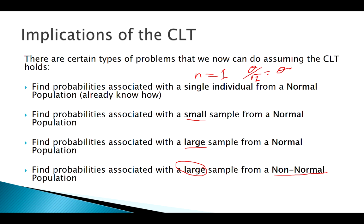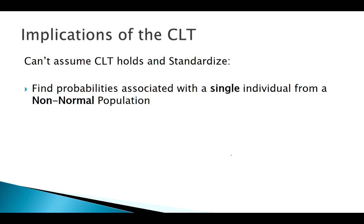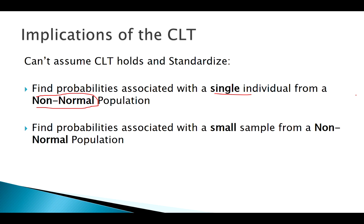What do we mean by small and large? It is somewhat arbitrary, but once we hit about 30, we're in pretty good shape to assume normality. What can we not do? If we have a non-normal population and don't have information about exactly what that distribution is, we can't really do anything with a single individual or a small sample from a non-normal population — we can't assume the CLT holds and standardize. There are other methods for that we'll look at in the future, such as when we know the non-normal distribution (like binomial).